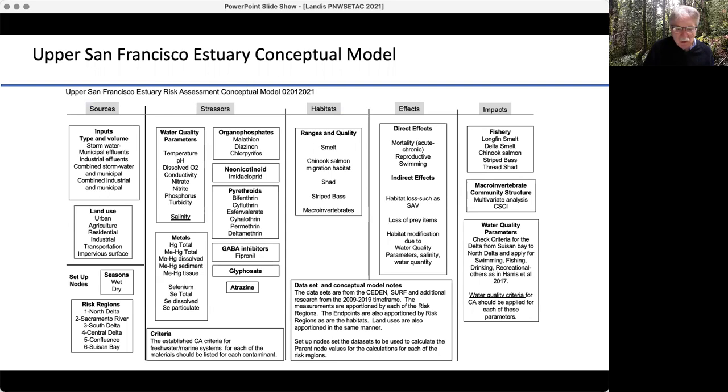Our stressors, a lot of them deal with water quality, like pH, temperature. A variety of chemicals like organophosphates, neonicotinoids, pyrethroids, GABA inhibitors, glyphosate, atrazine. We have criteria in California for them, but we're also looking at dose response curves to try to describe the amount of chemical and the kinds of effects they'll have.